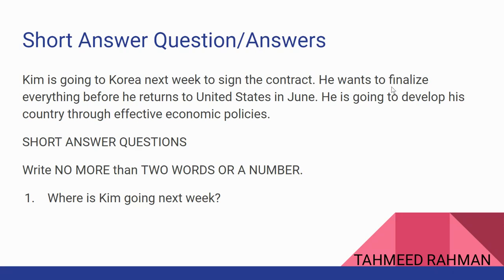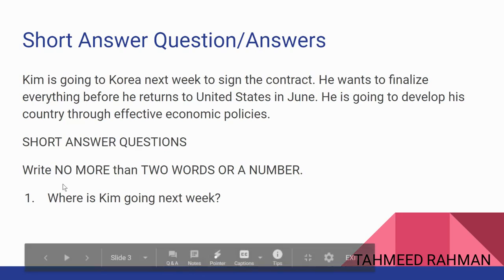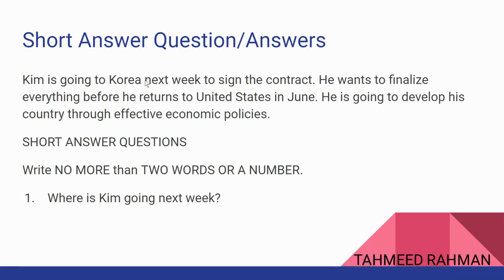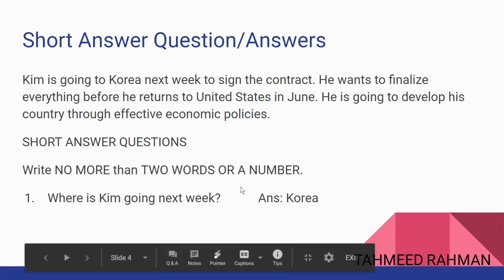Here is a sample: Kim is going to Korea next week to sign the contract. He wants to finalize everything before he returns to the United States in June. He is going to develop his country through effective economic policies. For the question 'Where is Kim going next week?', we can see that Kim is going to Korea next week, so we simply write 'Korea' as the answer. Make sure you answer within the word limit and do not write full sentences.